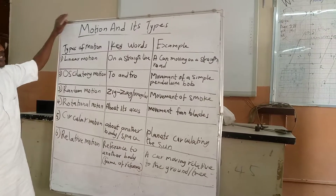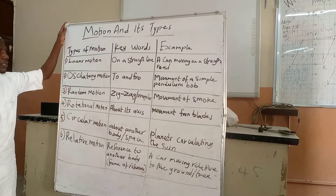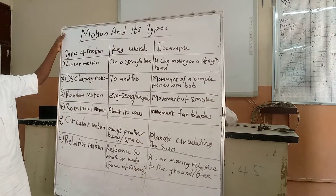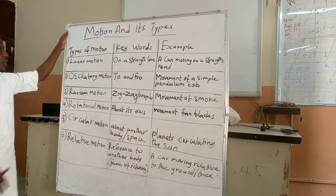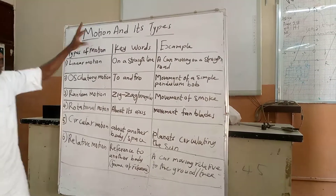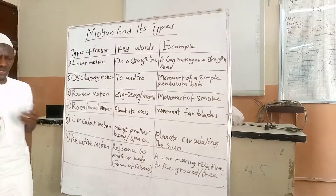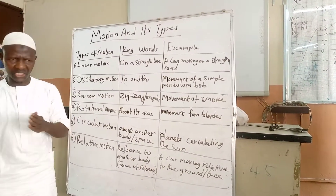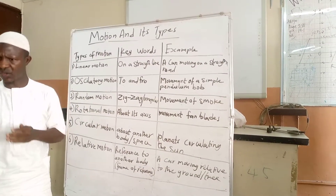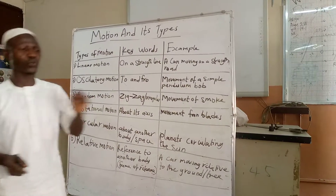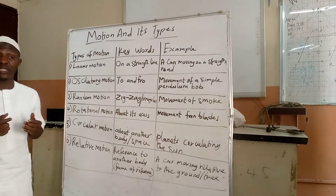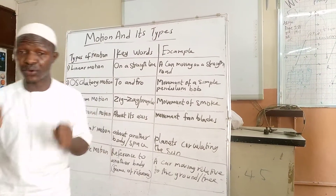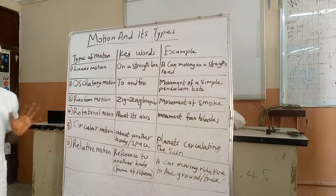For today the topic is motion, which is the second topic according to our scheme of work. Today we are continuing with motion. When we say motion, the first thing that is supposed to come to your mind is a change in position of an object — that is, when an object moves from one position to another. So when you are asked to define motion, just say it is the changing in position of an object with time.